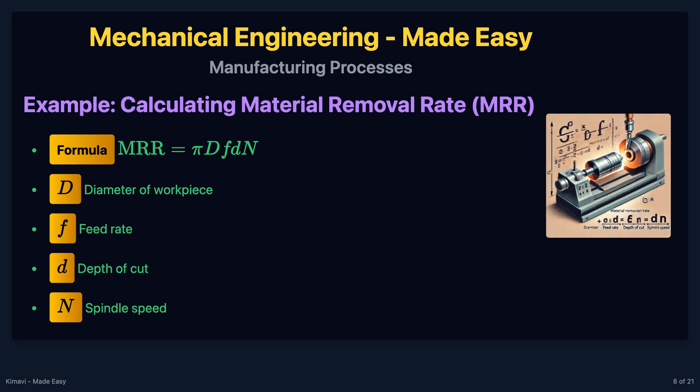The material removal rate, or MRR, in turning can be calculated using the formula: MRR equals pi times the diameter of the workpiece, times the feed rate, times the depth of cut, times the spindle speed.